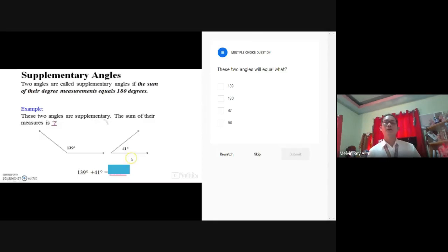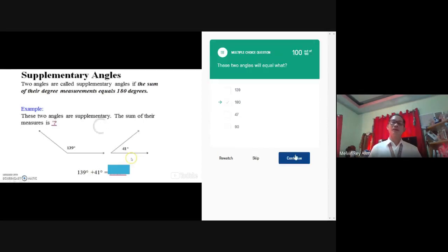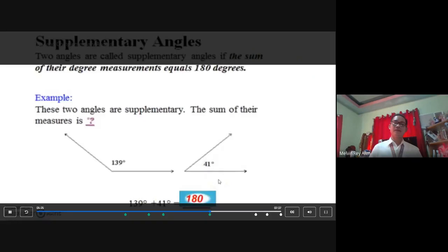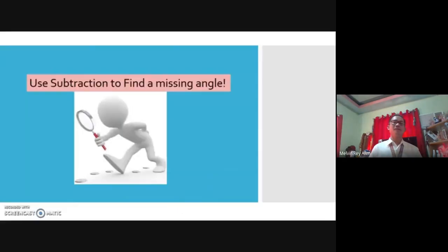Okay, next question. These two angles will equal what? Choices, 139. Next choice, 180, third, 47, fourth, 90. The answer is 180, submit, pocket check, and finish. Gives you 180 degrees, so it makes that supplementary angles.